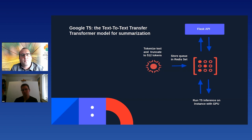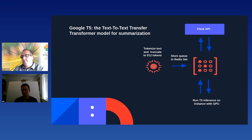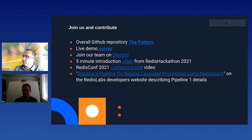The next pipeline is simpler. The summarization pipeline uses Google's T5 — Text-to-Text Transfer Transformer — model for summarization, and it all runs just using Redis Gears. The difference from question answering is that summarization is easier because we can pre-tokenize the whole text, store the output in a Redis set, and then run T5 inference on the GPU or CPU instance.